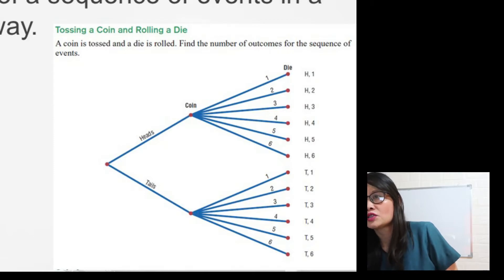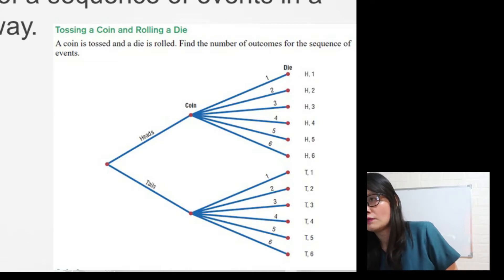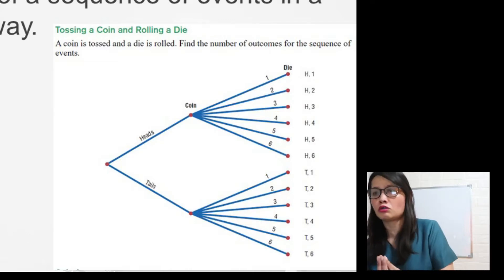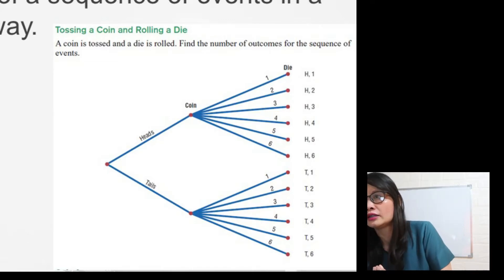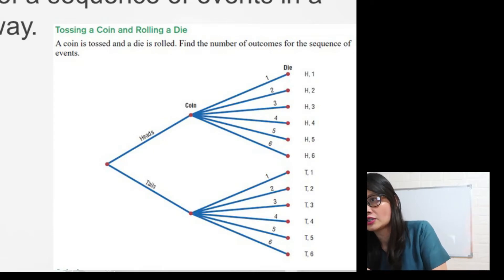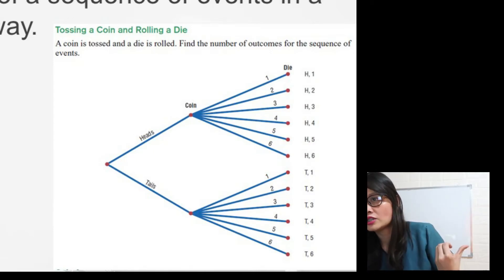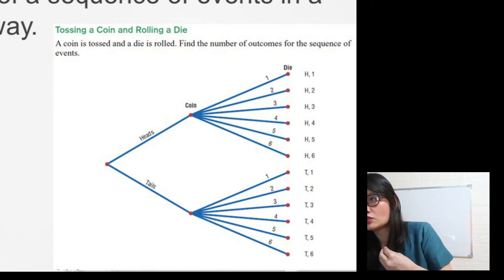And then if it is tail, for the coin there are two choices — head and tail. So if the first choice is head, for the die there are six choices. Then the second choice is tail, and for the tail there are also six choices for the die.